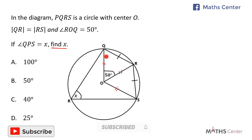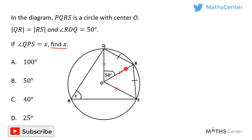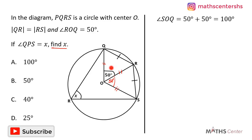Since OQ equals OR equals OS, and QR equals RS, the two triangles are congruent. So if angle QOR is 50 degrees, then angle ROS is also 50 degrees. Therefore, angle QOS equals 50 degrees plus 50 degrees, which is 100 degrees.